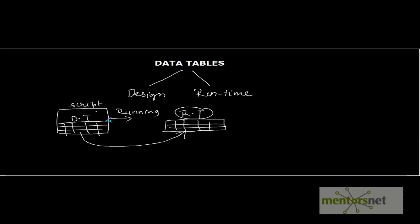The final data after completion of the script — created or modified in the data table — is stored in this table and shown from the results window. You cannot view it from the QTP editor; from the results window you will see the run time data table. So these are the two types of data table in QTP: design time and run time.